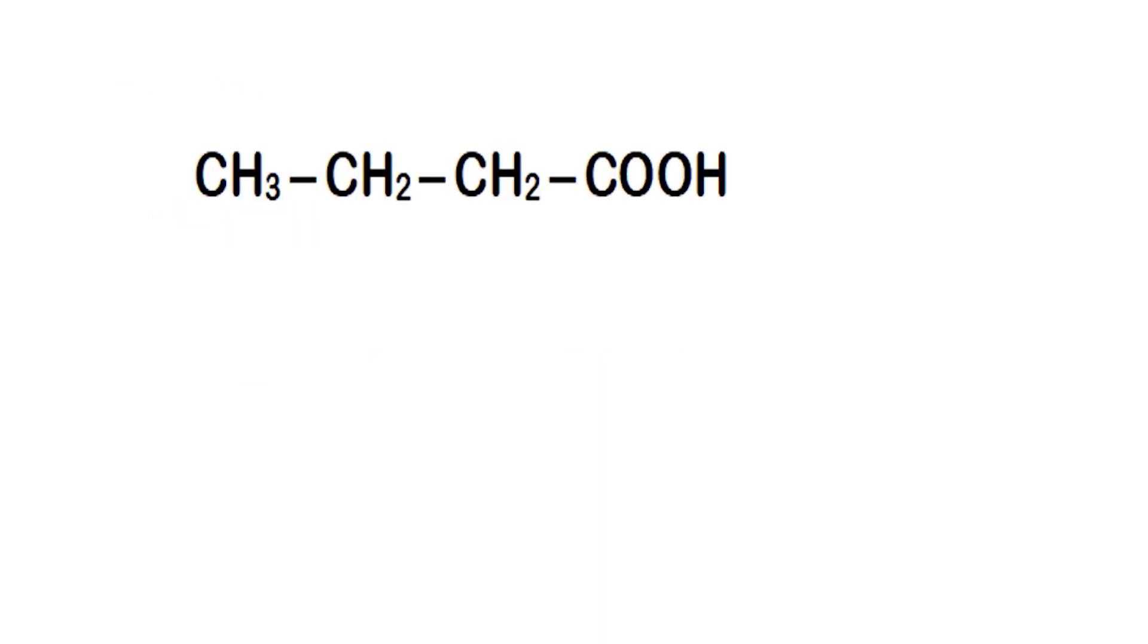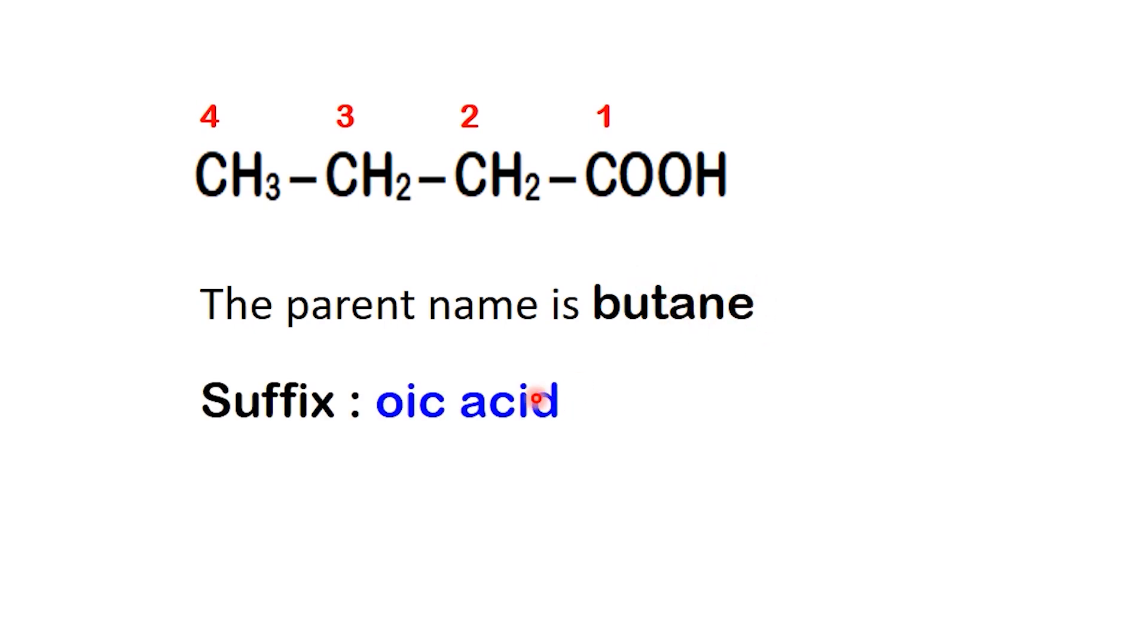Now that we understand the basics, let's apply the rules with our first example. To name it, we start by identifying the longest chain that includes the carboxyl carbon. This chain has four carbons, which corresponds to butane. Since it's a carboxylic acid, we replace the final E with oic acid, giving us butanoic acid.